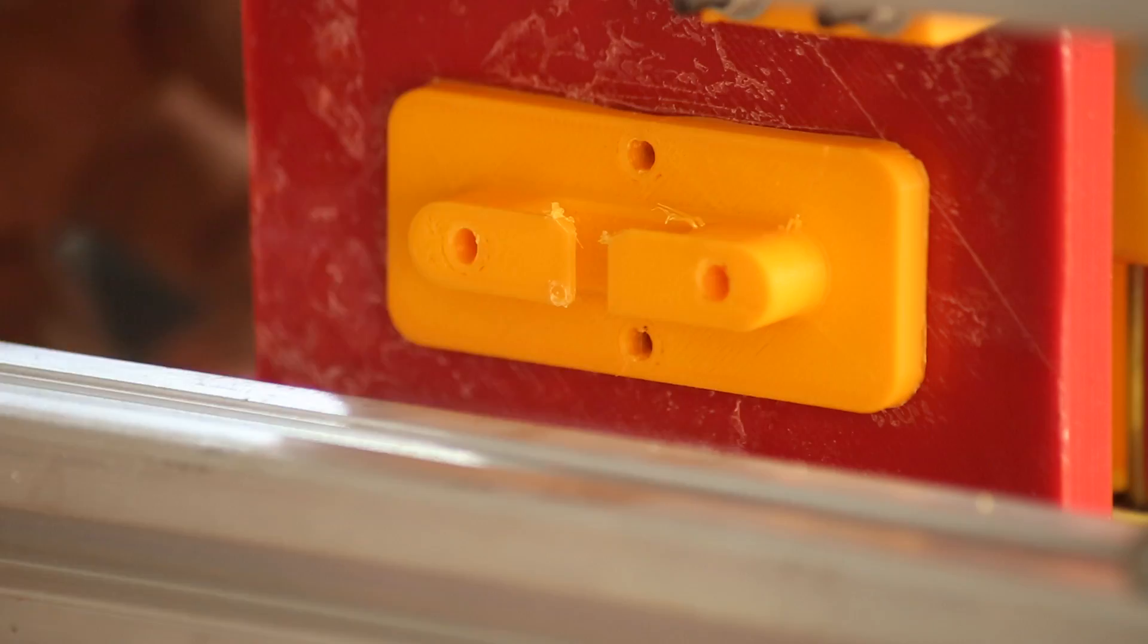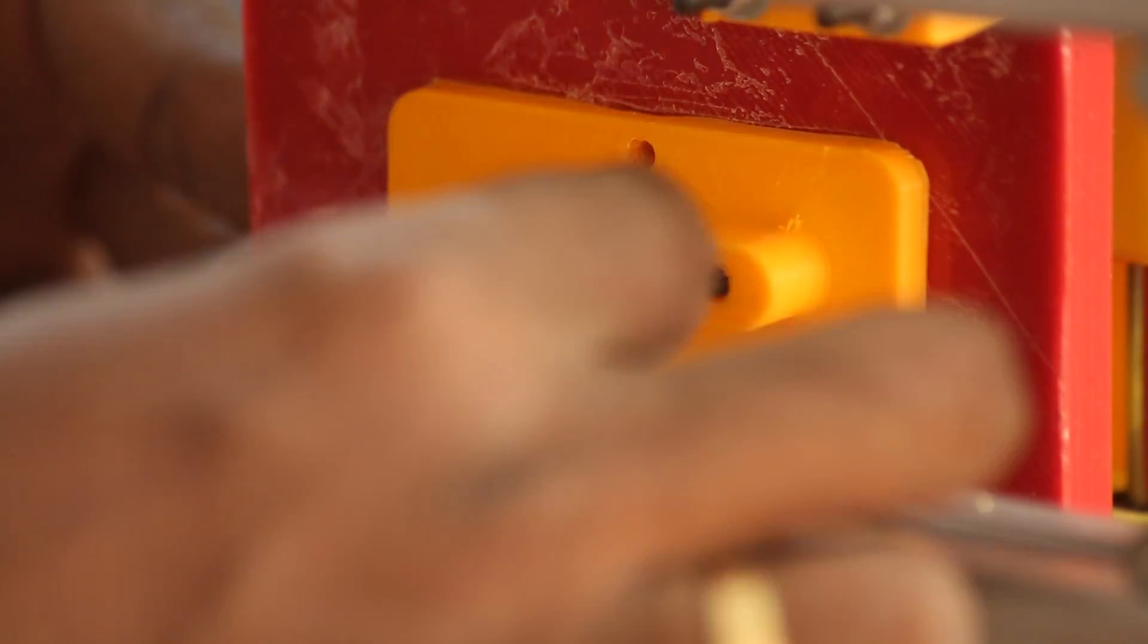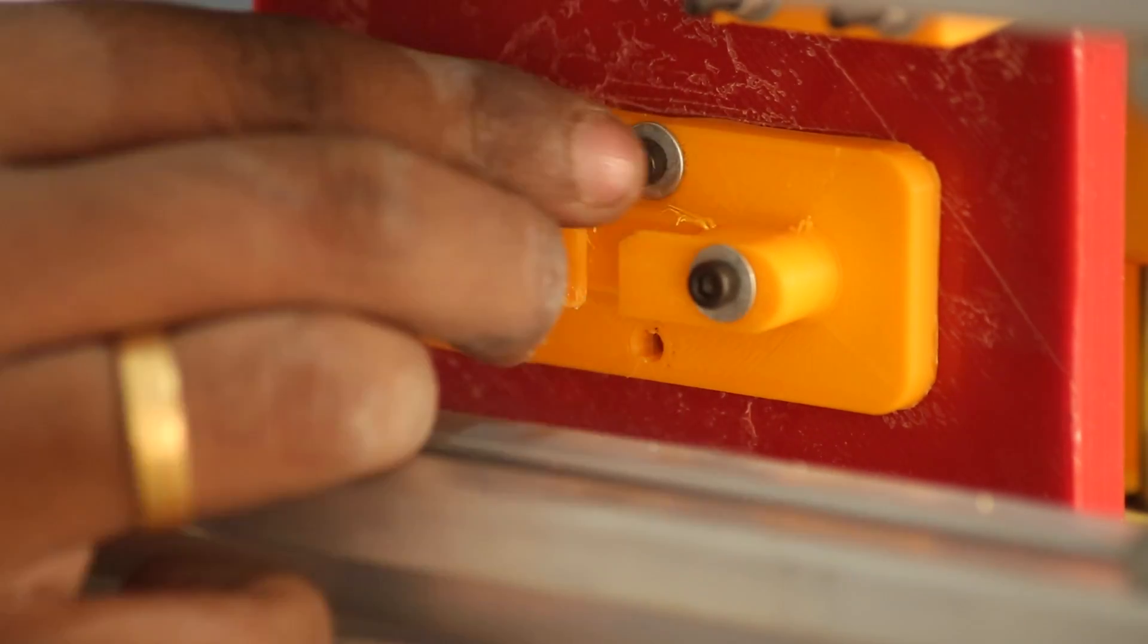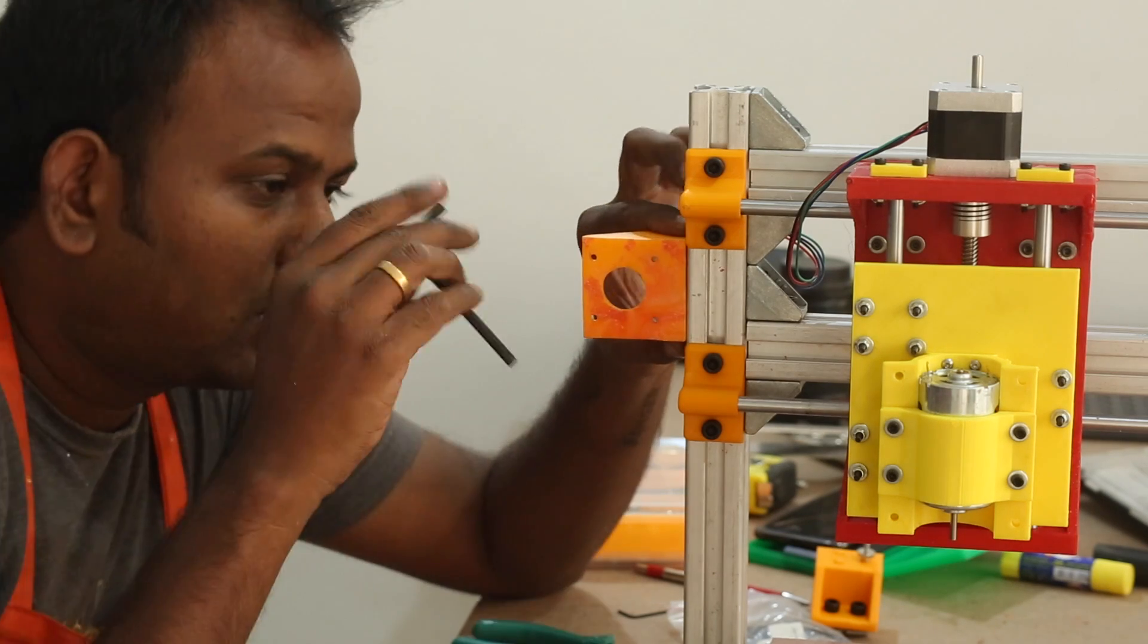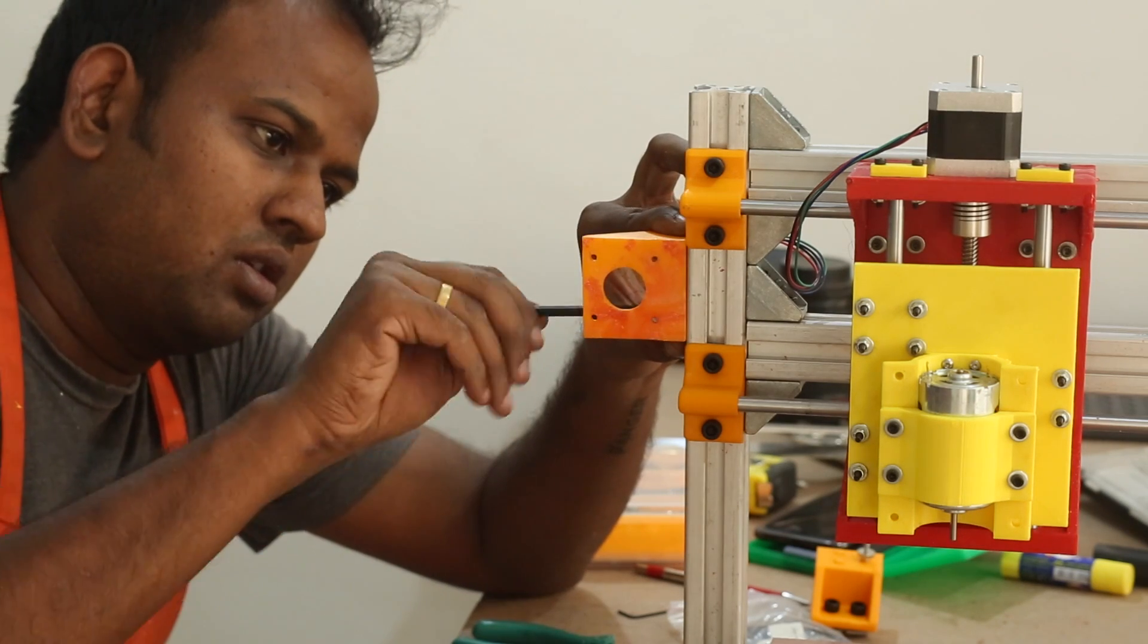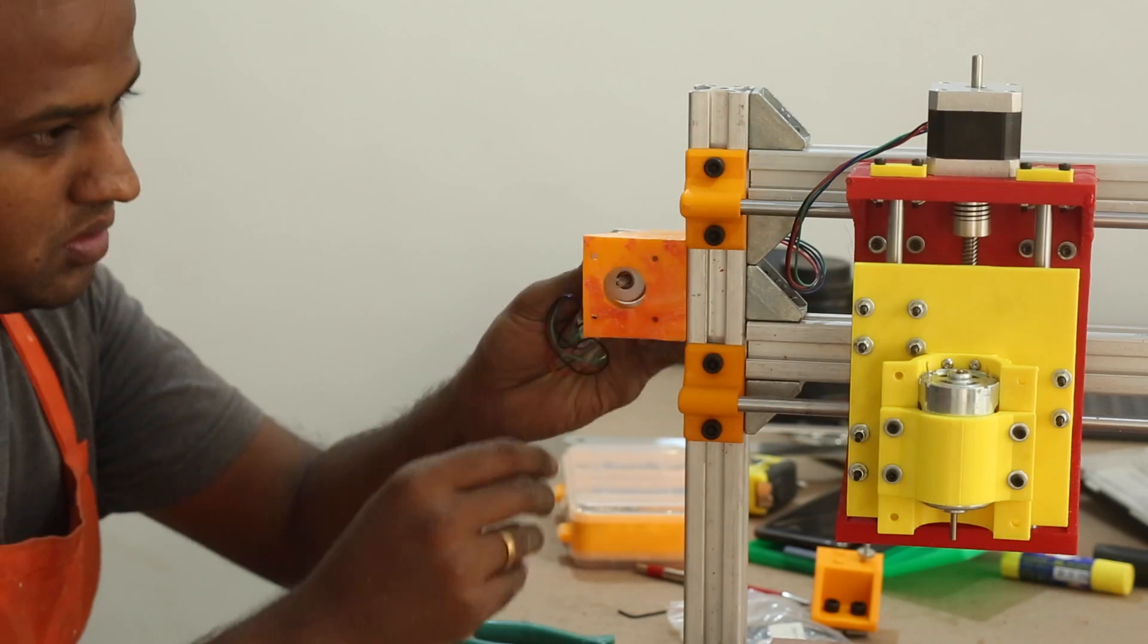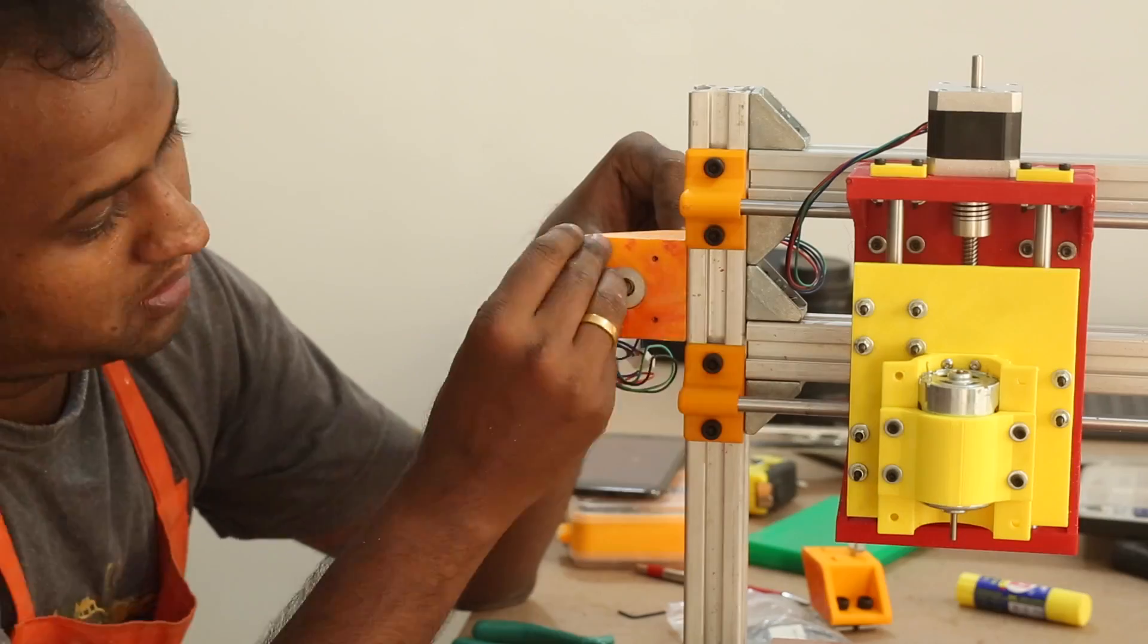Still, I chose to add some screws for extra strength. Here I am eyeballing the placement of the motor. It has to be in line with the belt holder. Then I can screw the motor holder in place and then mount the motor to it.